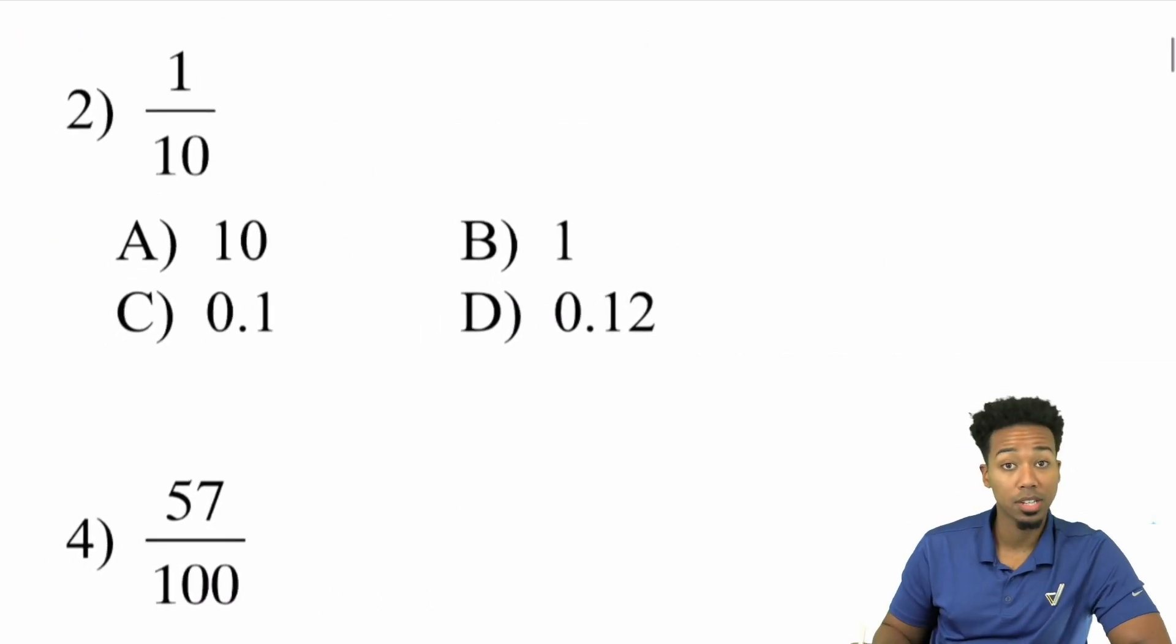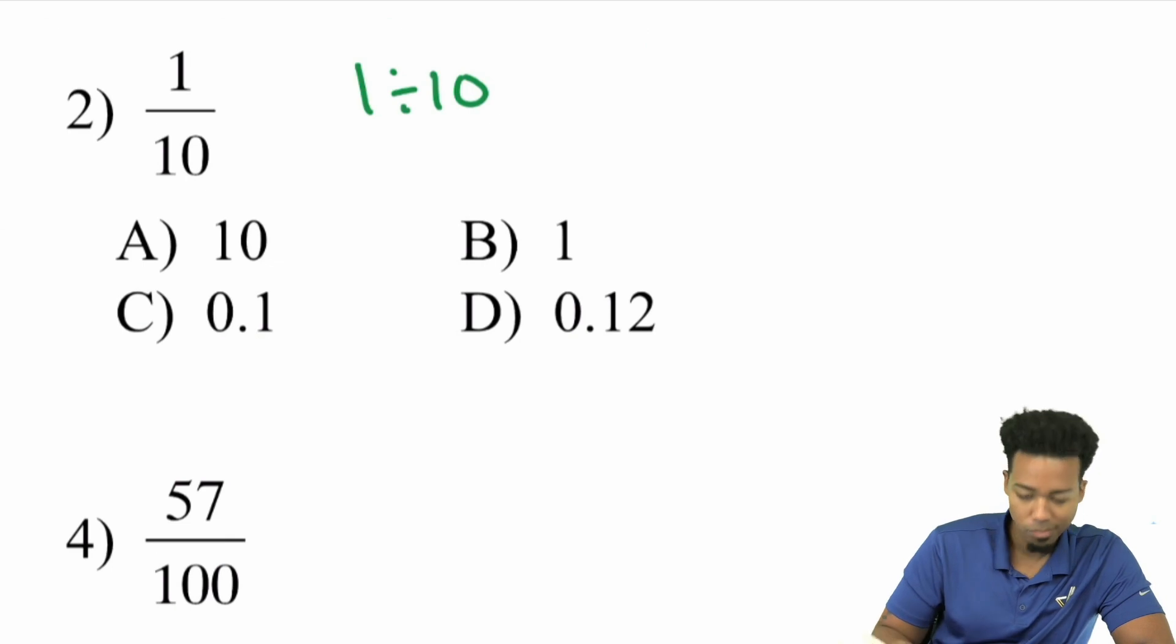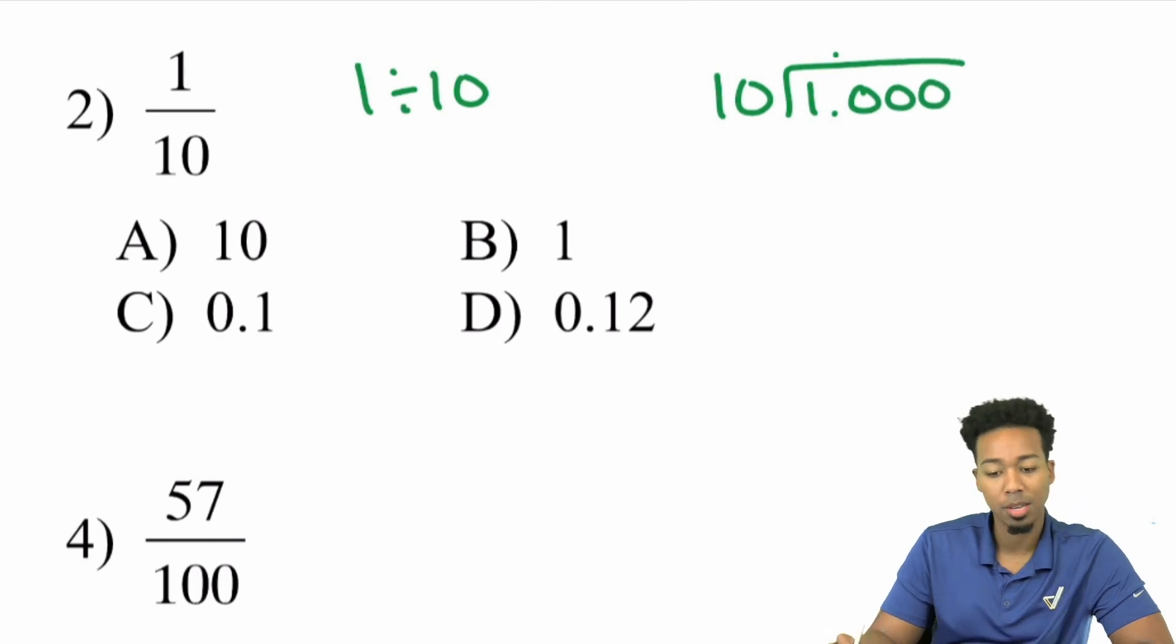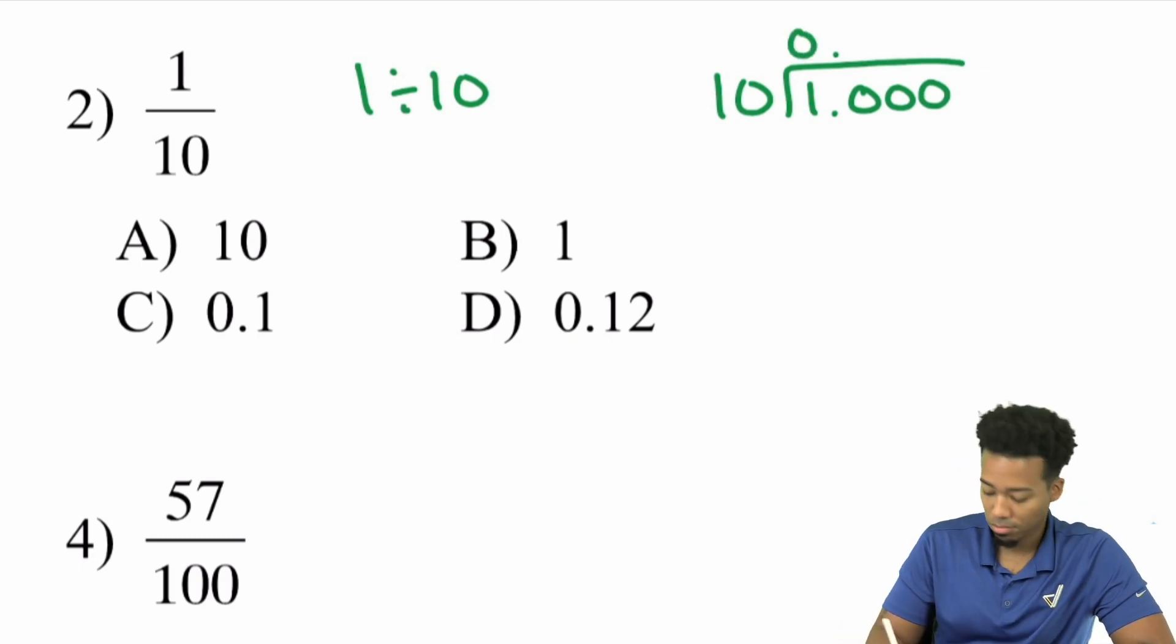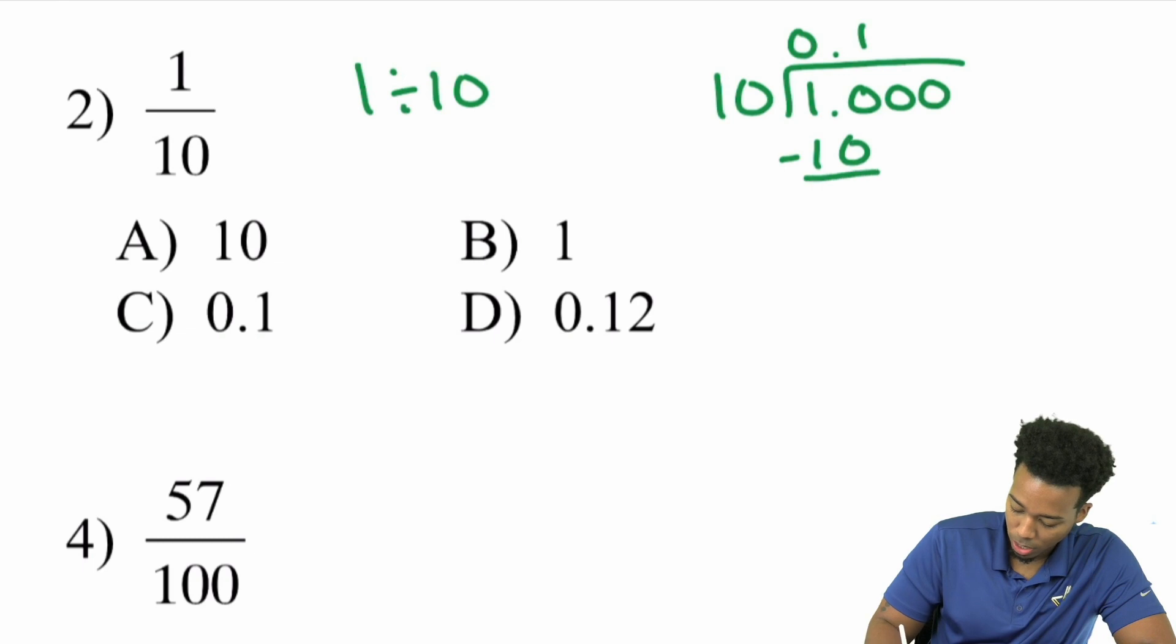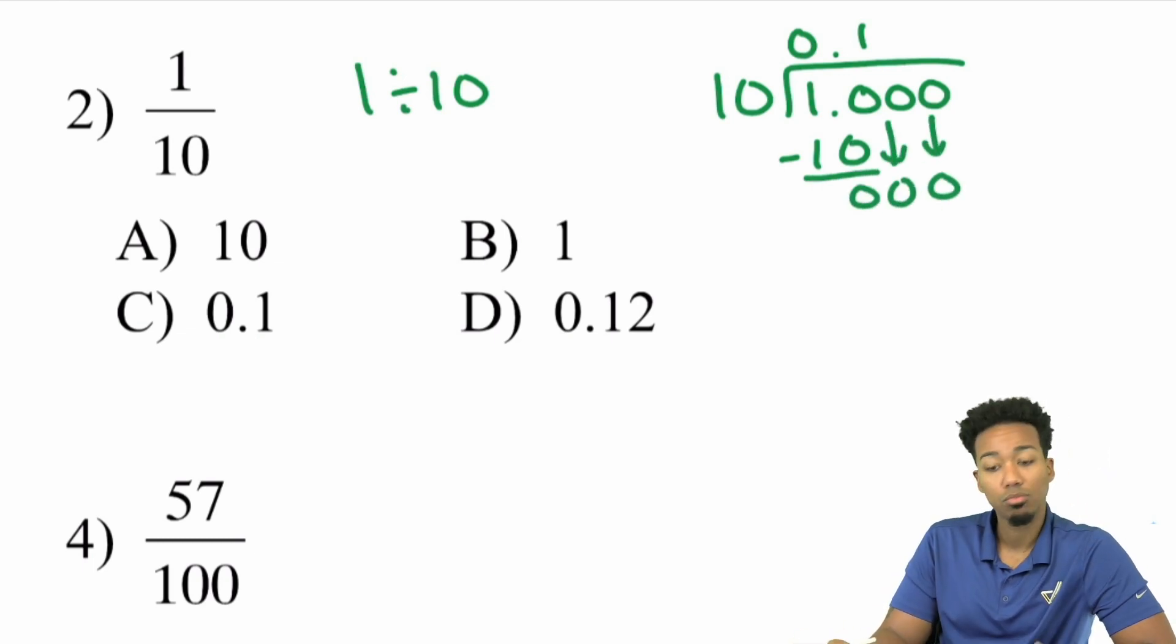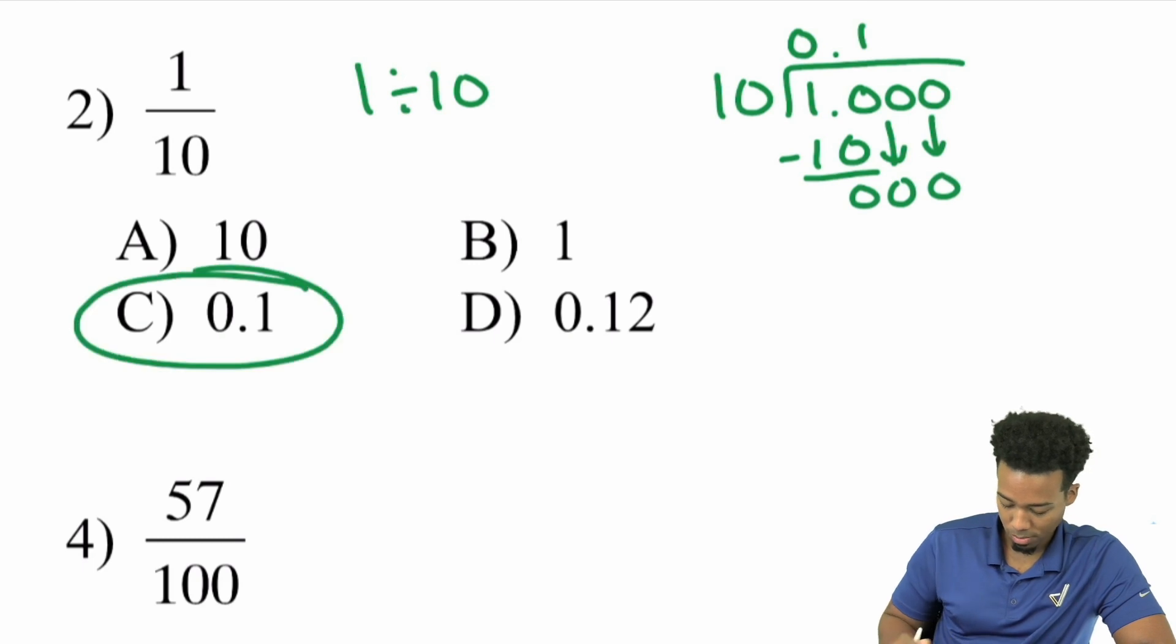So over here, if you look at 1 over 10, well, again, that's the same thing as saying 1 divided by 10. And you'll write that as long division. So you'll say here, 10 goes into 1. Put the decimal that you need and make sure to put the decimal in the same spot. 10 goes into 1, it doesn't. 10 goes into 10 one time. Subtract the 10, you get a 0. And look at that. Sweet. So 0.1. And there we have it.